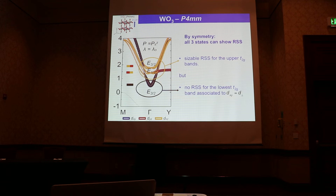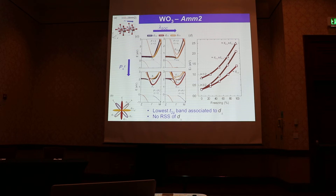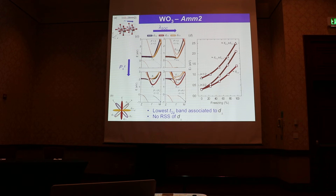We also looked at what happens when the polarization is rotated to the [110] direction, going from the P4mm to the Amm2 phase. We get exactly the same picture, independent of the polarization orientation. The splitting is slightly different because the symmetry is lower, but the lowest state at the bottom of the conduction band is always associated with the D orbital perpendicular to the polarization direction and shows no Rashba spin splitting.